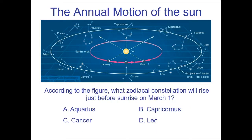Here's a question: what zodiacal constellation would arise just before sunrise on March 1st? The answer is Capricorn. Just before sunrise, the sun rises in the east, so the constellation that arose just before it would be located to the west of it — just above the horizon first. In this picture, west is clockwise. The sun is in Aquarius on March 1st, and just to the west of it is Capricorn. That's how we identify it.